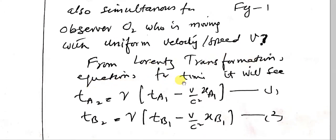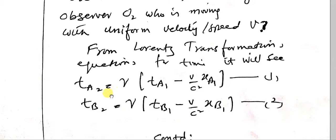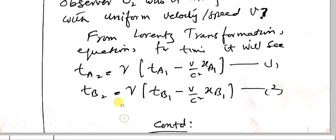Observer O2 in the moving frame will observe: t_a2 equals gamma times t_a1 minus v over c-squared times x_a1, and t_b2 equals gamma times t_b1 minus v over c-squared times x_b1, where v is the constant speed of reference frame 2.